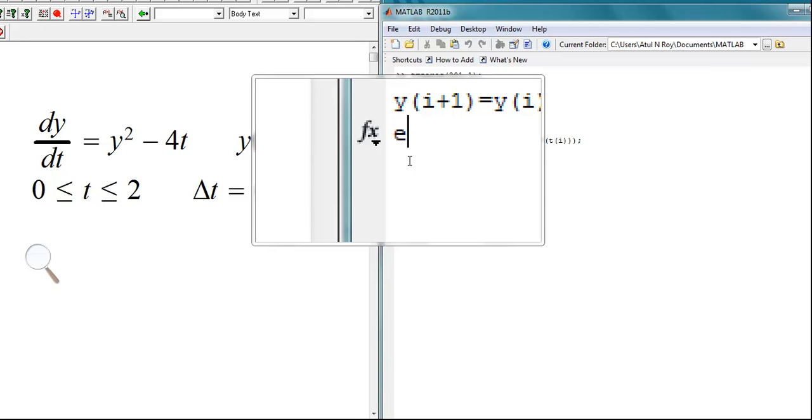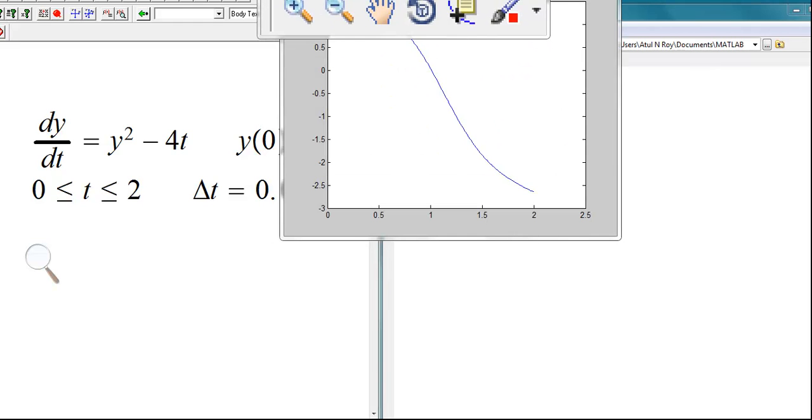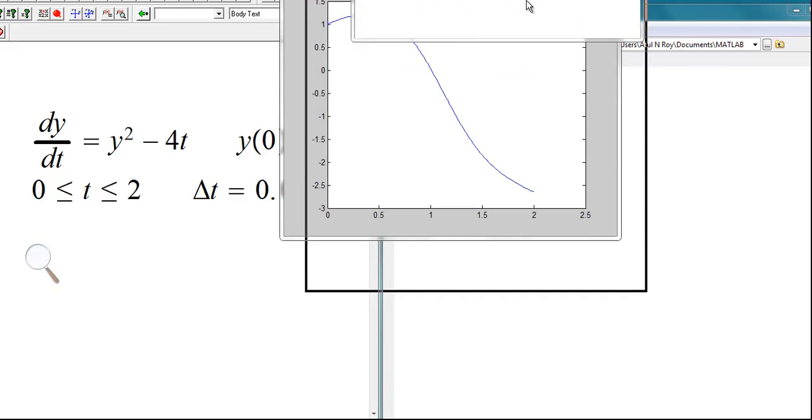And we will say that we are done, so we will simply say end. Now you can say plot t, y. And when you say that, here is a plot for you.